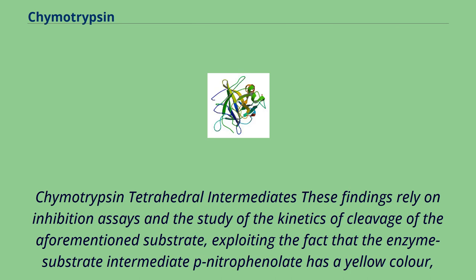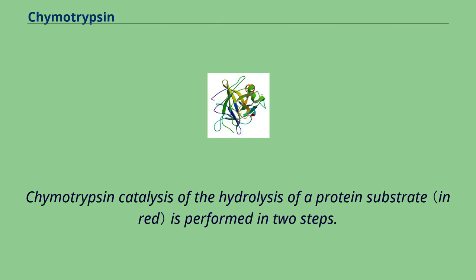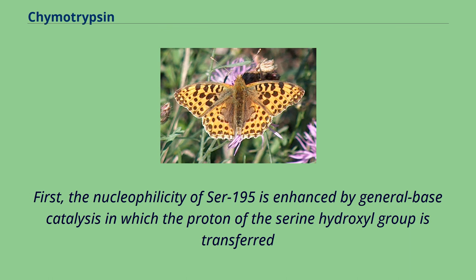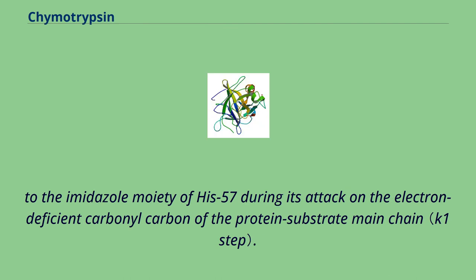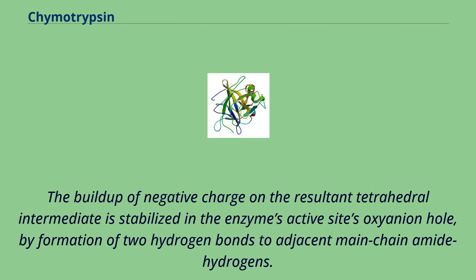Chymotrypsin tetrahedral intermediates: these findings rely on inhibition assays and the study of the kinetics of cleavage of the aforementioned substrate, exploiting the fact that the enzyme-substrate intermediate p-nitrophenylate has a yellow color, enabling measurement of its concentration by measuring light absorbance at 410 nm. Chymotrypsin catalysis of the hydrolysis of a protein substrate is performed in two steps. First, the nucleophilicity of Ser-195 is enhanced by general base catalysis, in which the proton of the hydroxyl group is transferred to the imidazole moiety of His-57 during its attack on the electron-deficient carbonyl carbon of the protein substrate main chain. This occurs via the concerted action of the three amino acid residues in the catalytic triad. The buildup of negative charge on the resultant tetrahedral intermediate is stabilized in the enzyme's active site's oxyanion hole, by formation of two hydrogen bonds to adjacent main chain amide hydrogens.